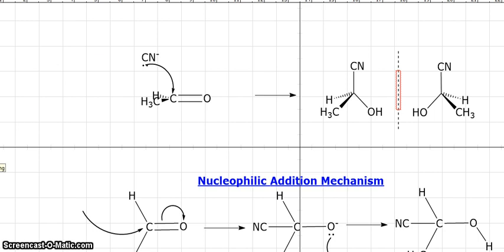When we get the cyanide ion approaching from the top like this, and the methyl group is pointing down this way and the hydrogen is pointing away that way, then the carbon-oxygen bond will move down into this position here. And so we end up with this enantiomer.